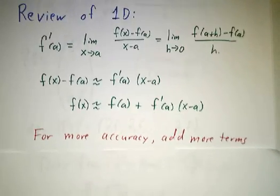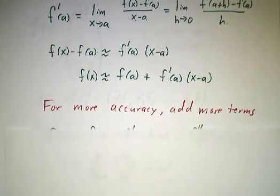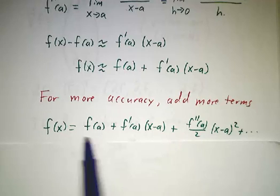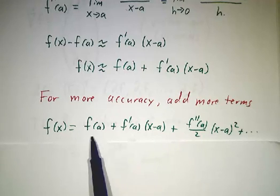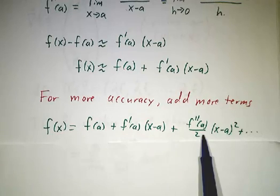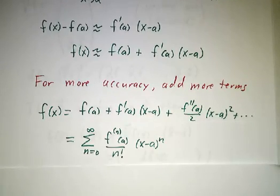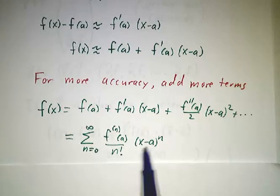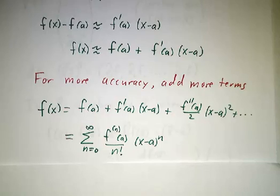And of course, that's really just the first term in a long series. If you want to get the exact answer, you add infinitely many terms. If you want to get a better answer than one term, you add two terms, three terms, four terms, five terms. So we have all the terms in the Taylor series: the sum as n goes to infinity of the nth derivative at a divided by n factorial times (x-a) to the nth power.